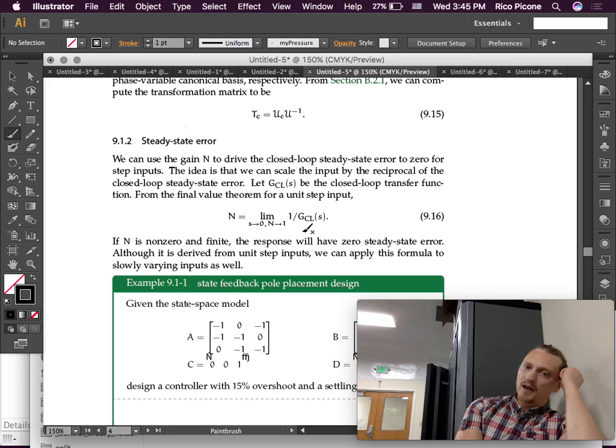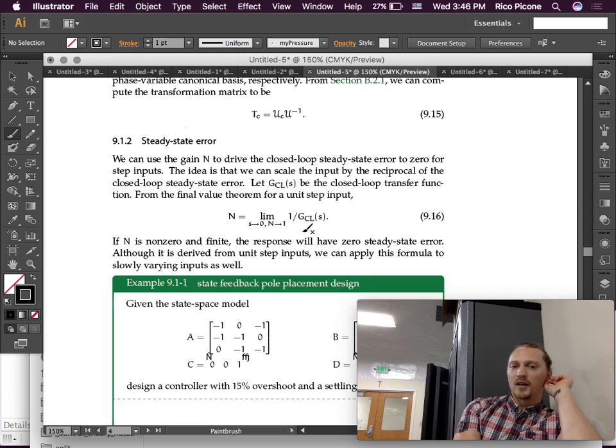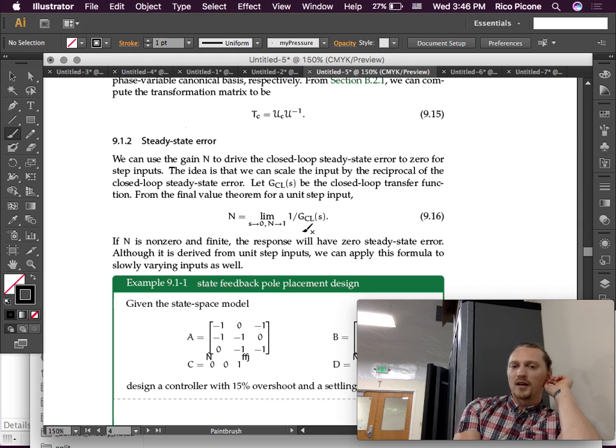That's ideal. That's what we would like. Although it is derived from unit step inputs, we can apply this formula to slowly varying inputs as well. It's not like it has zero steady state error for a step input doesn't mean it's going to have something wildly bad for other inputs. It's just that step inputs are exactly true. There it is. So, state feedback, pole placement design is going to be what we will do when we come back from a little break.